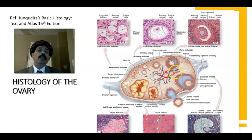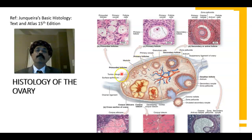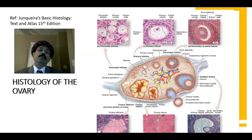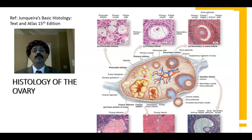The ovary is surrounded by the tunica albuginea, which is covered by the cuboidal epithelium — an epithelium derived from the visceral peritoneum. The ovary receives its blood supply by means of the mesovarium. It is suspended by the broad ligament, the suspensory ligament of the ovary, and the ovarian ligament. The point at which blood vessels enter is called the hilum of the ovary, which continues into the medulla of the ovary.